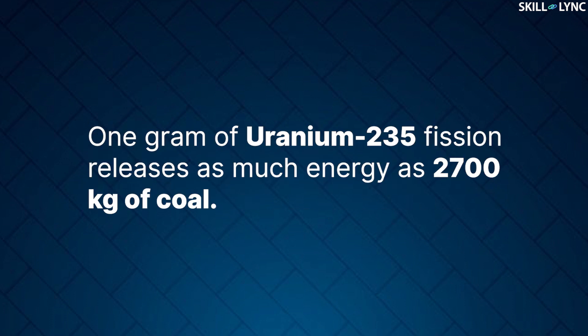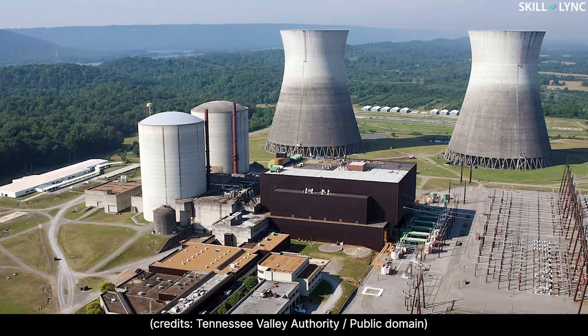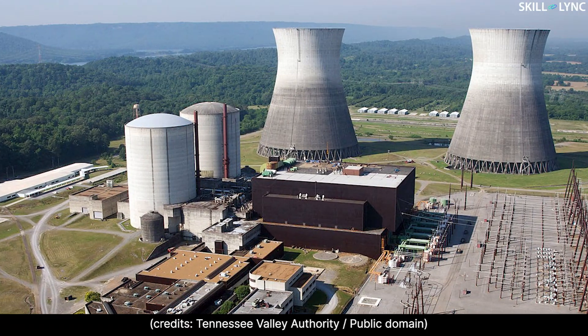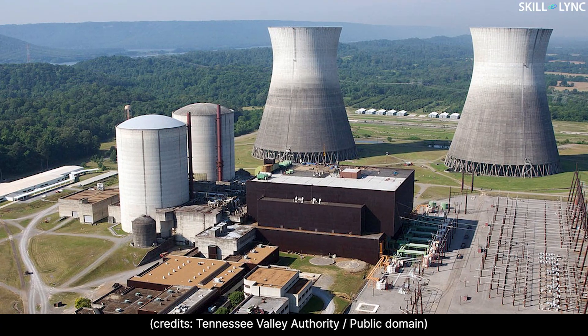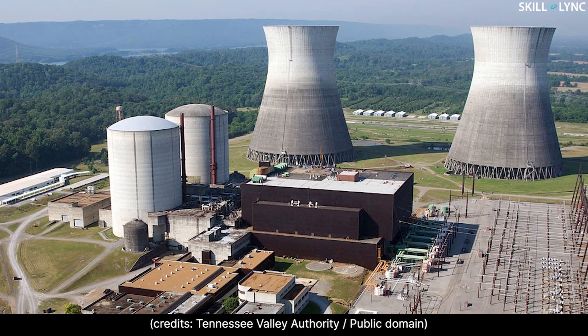One gram of uranium-235 fission releases as much energy as 2700 kg of coal. Nuclear power can be used to generate electrical power in a nuclear power plant. In this video, we will talk about the layout of a nuclear power plant and its components.